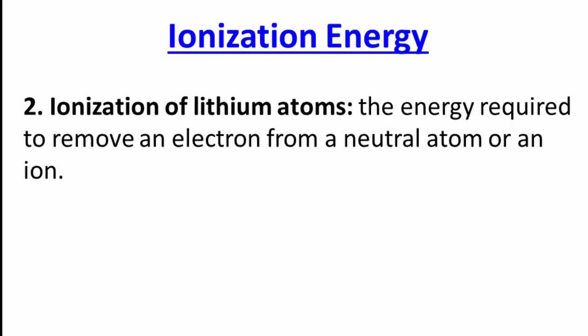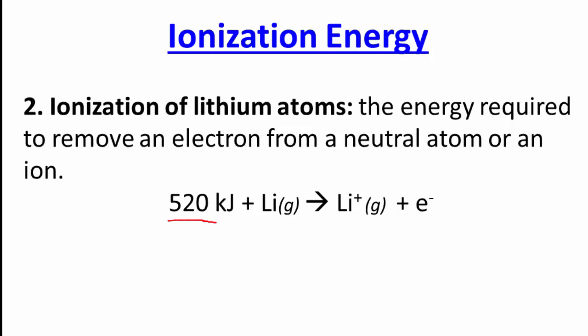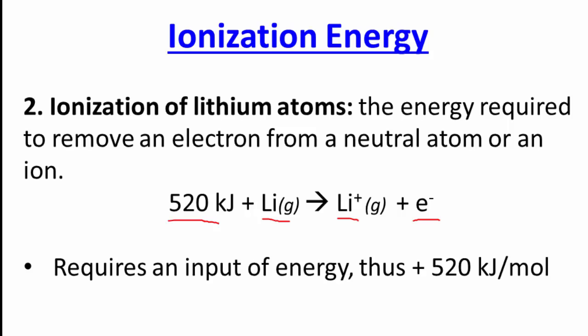Number two, ionization energy. Lithium has an electron in the 2s1 orbital. Ionization energy is the energy required to remove an electron from the neutral atom. For lithium, 520 kilojoules is added to a mole of lithium in the gaseous state to produce lithium ion in the gaseous state, and a mole of electrons. Energy is a reactant here, so the delta H is a positive 520 kilojoules per mole.